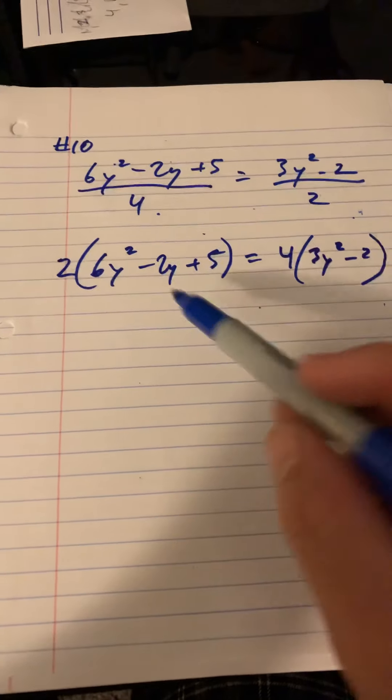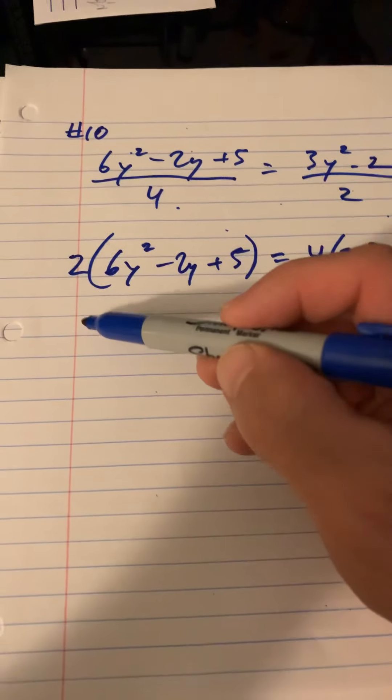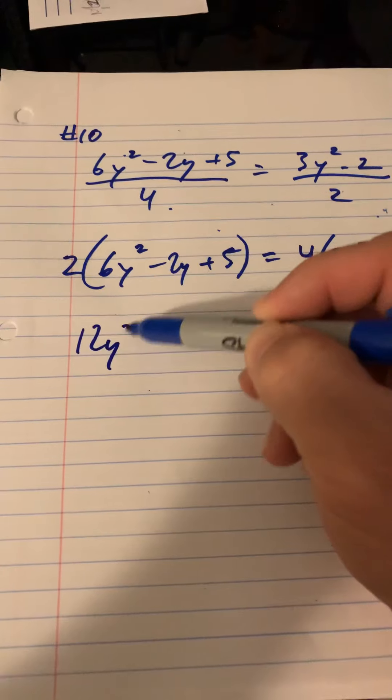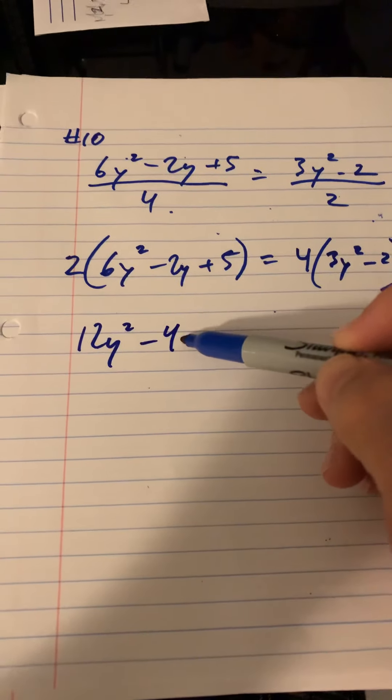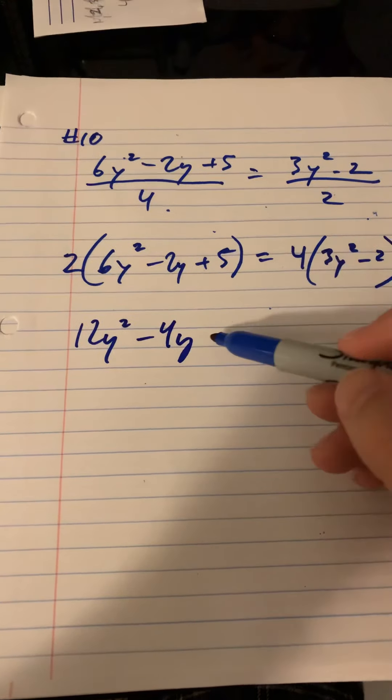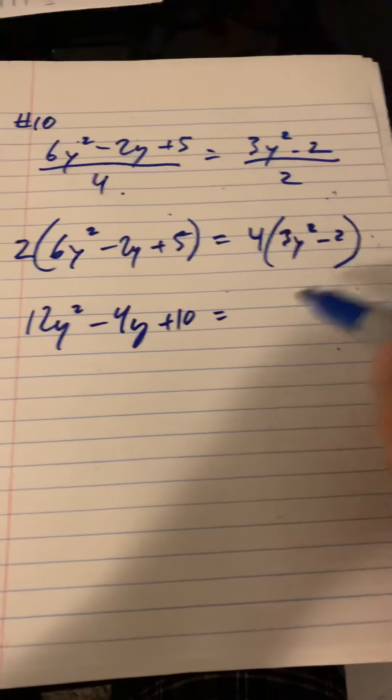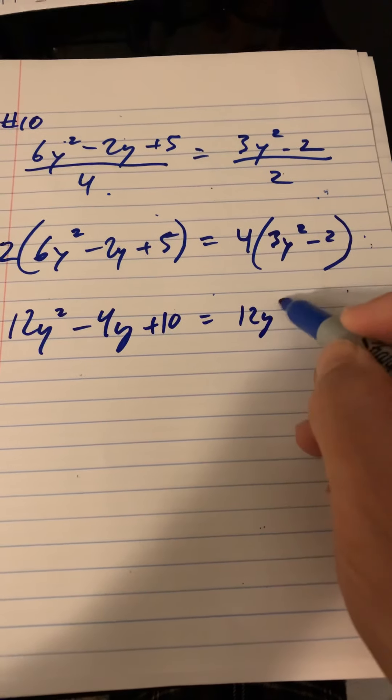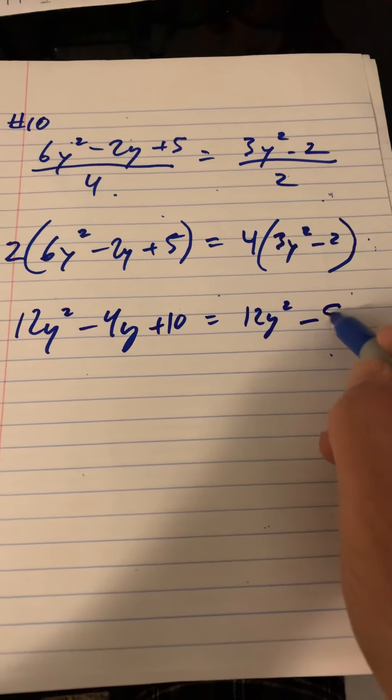Alright, so now we just need to distribute. This is going to be 12y squared minus 4y plus 10 equals 12y squared minus 8.